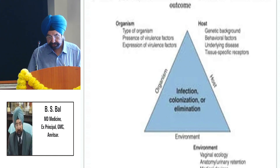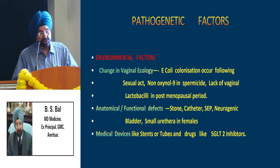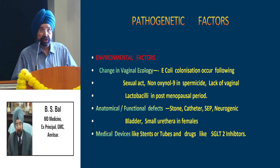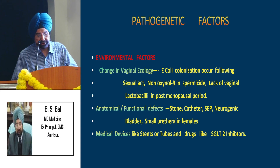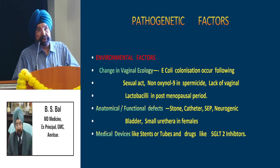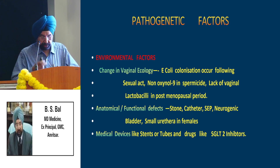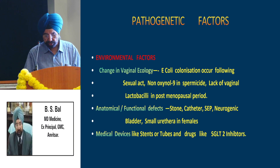There are three important factors in pathogenesis: environmental factors, host factors, and organism or microbial factors. This triangle ultimately leads to either infection and colonization or elimination of the bacteria. Environmental factors include change in vaginal ecology, colonic colonization following sexual activity, use of nonoxynol-9 in spermicides which increases colonization, and lack of vaginal lactobacilli in the postmenopausal period. There can also be anatomical or functional defects like stone formation, catheter, large prostate, neurogenic bladder, or short urethra in females. Medical devices like stents or nephrostomy tubes, and drugs like SGLT2 inhibitors, are also environmental factors.